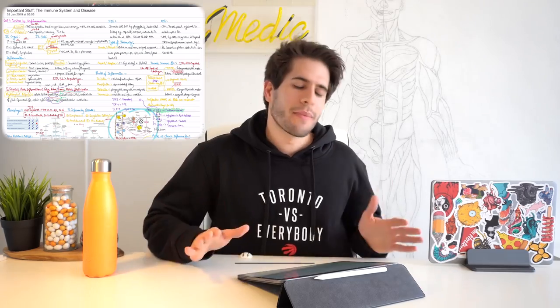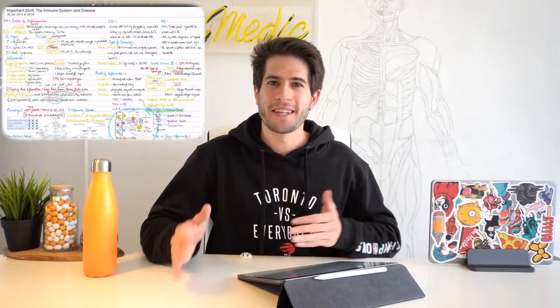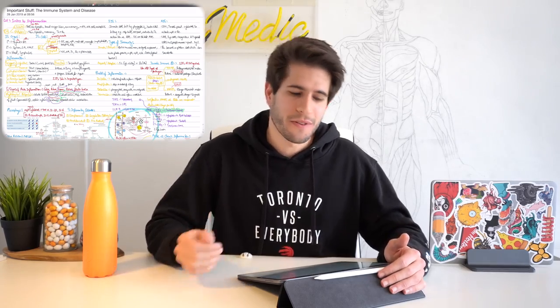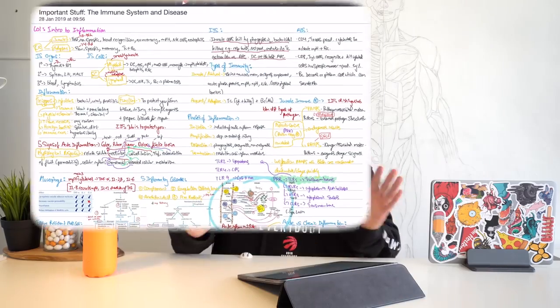I can already see the comments — the first thing you guys are going to say is that my notes look really messy. As long as I can read them, that's the only thing that's important. Just to prove my point: innate cells kill by phagocytosis, bactericidal killing, e.g. respiratory burst, nitrous oxide production, and also do transcription activation as antigen-presenting cells. Dendritic cells are the best antigen-presenting cells. There you go — I've proved I can read my own writing without any problem.